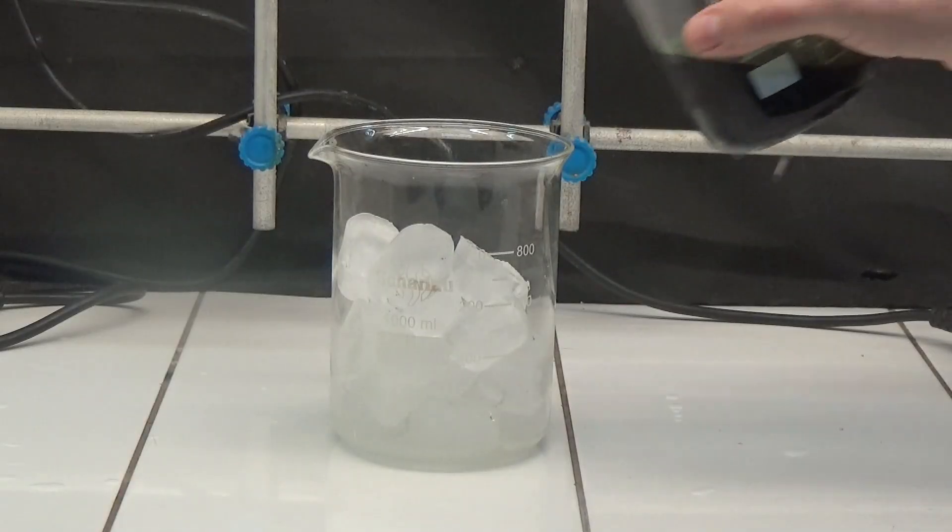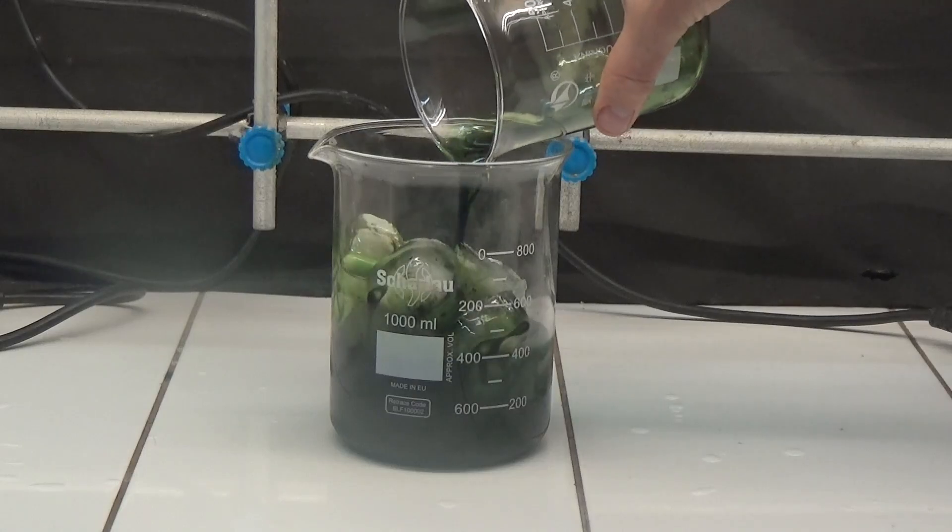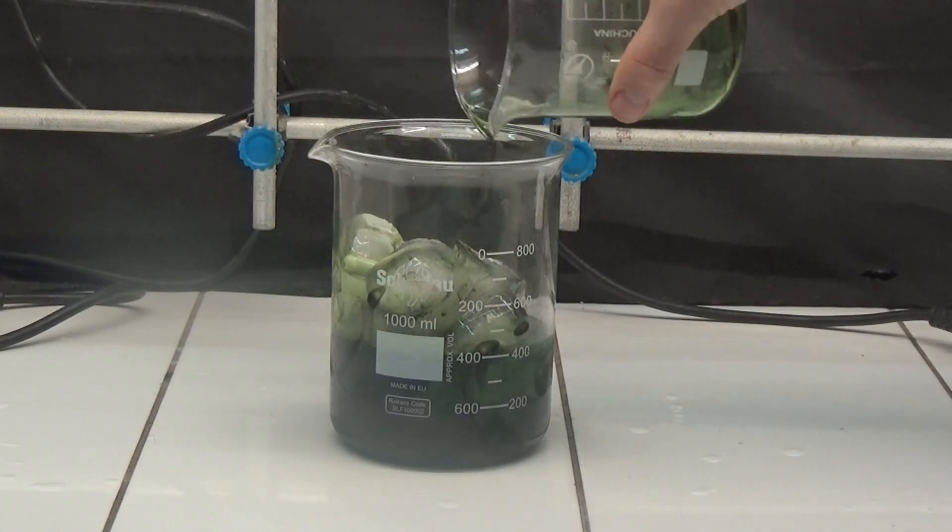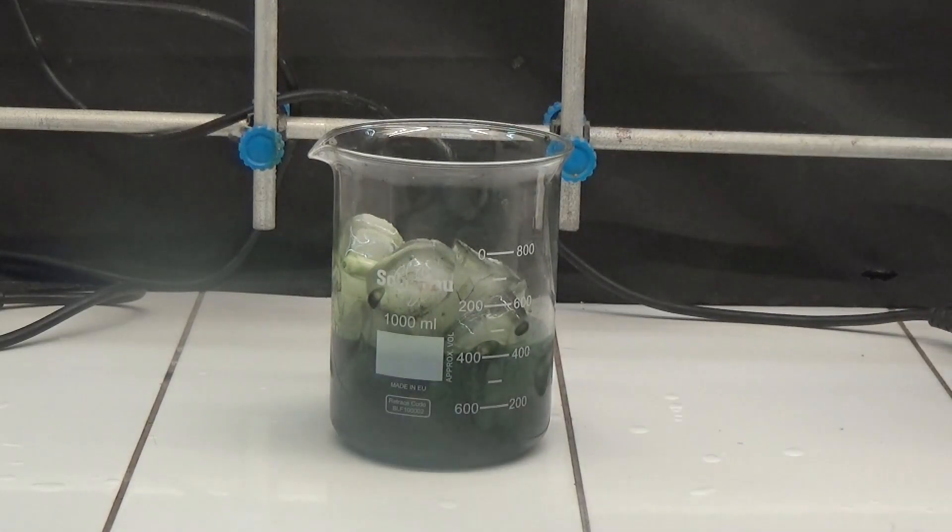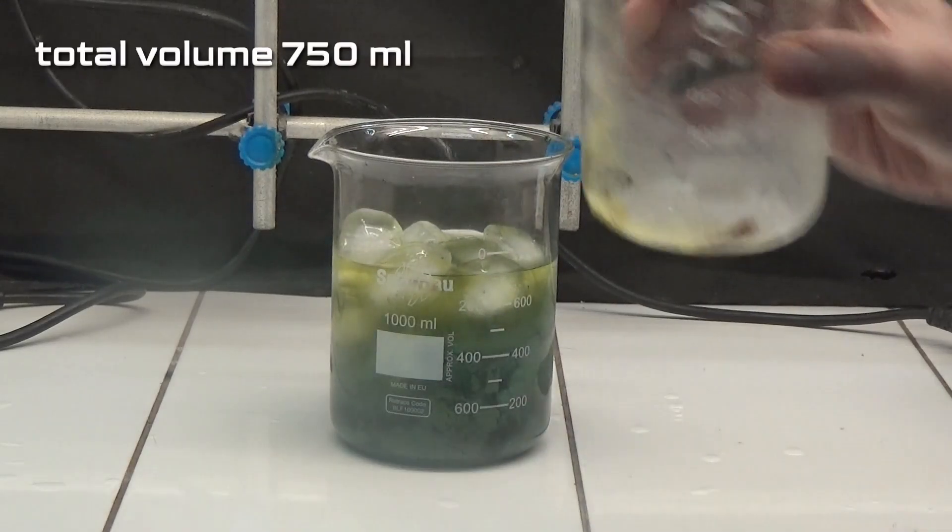The mixture is poured into a 1000ml beaker containing 2 thirds of its volume of ice. The total volume should be 750ml, if necessary add water.